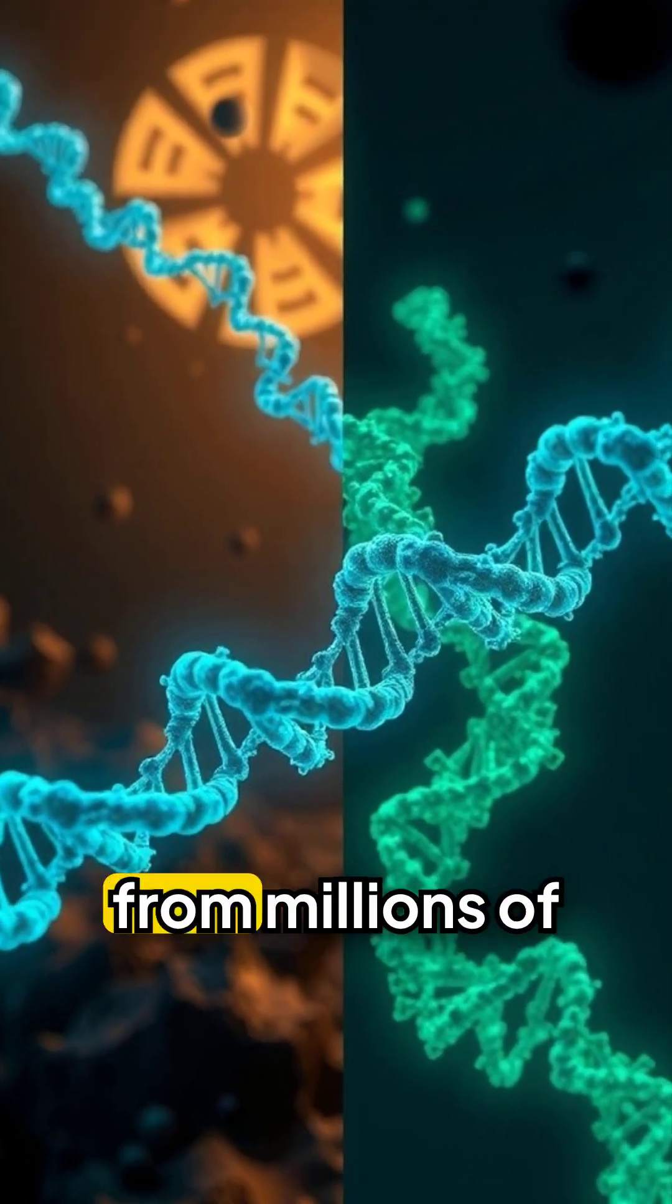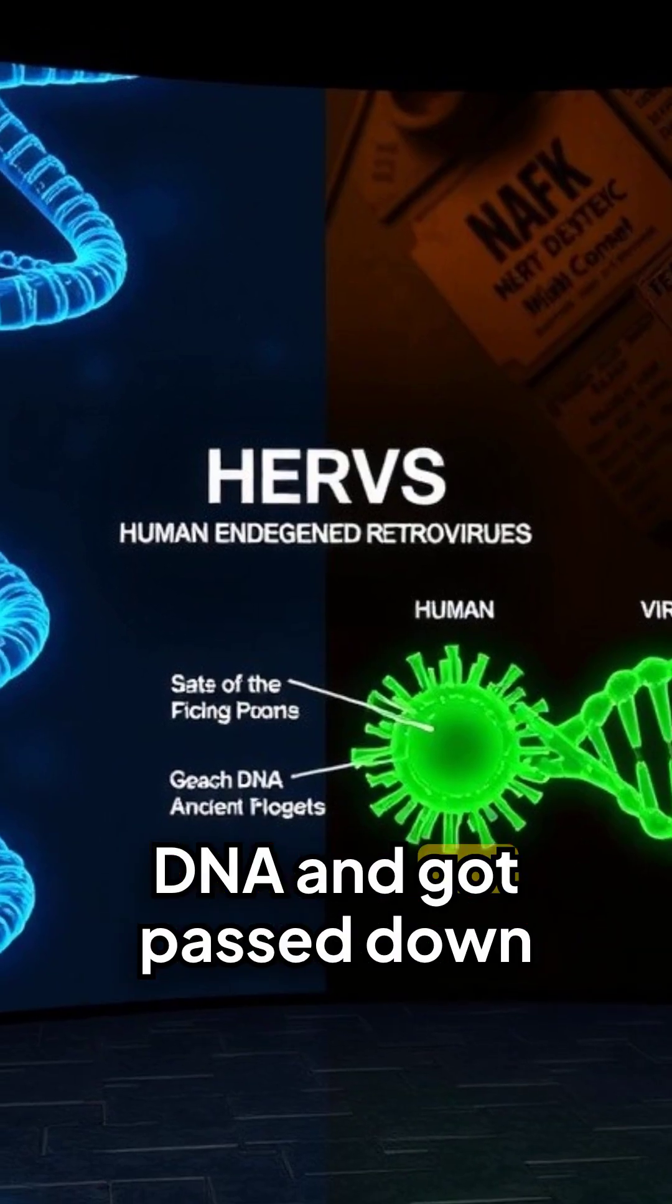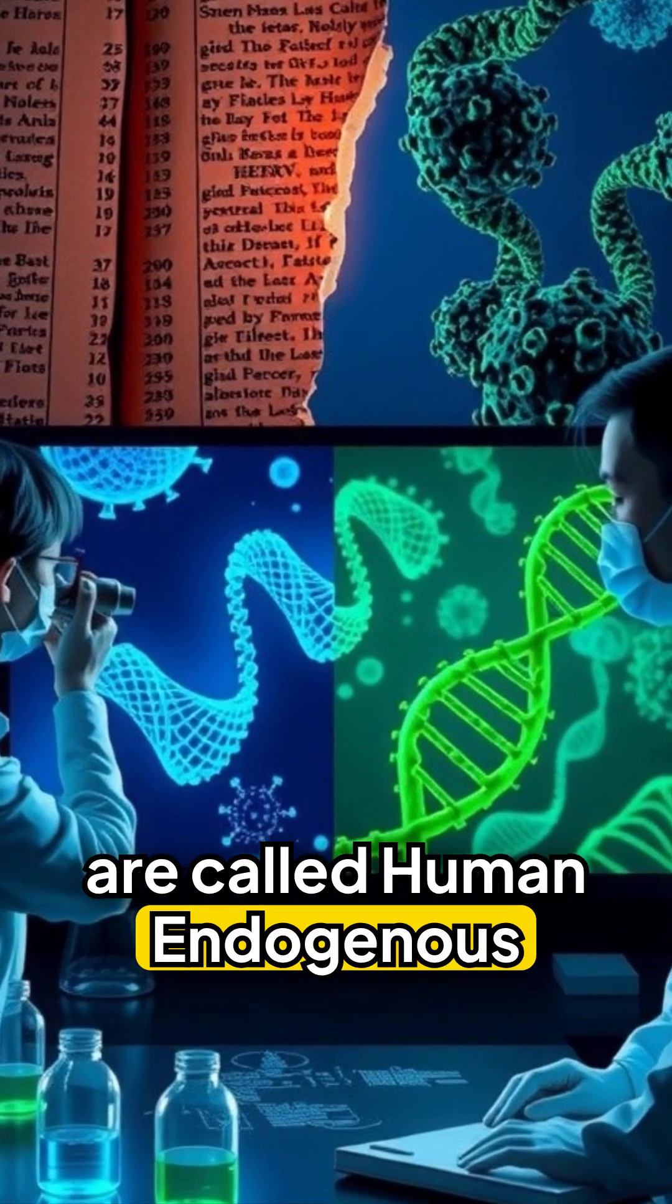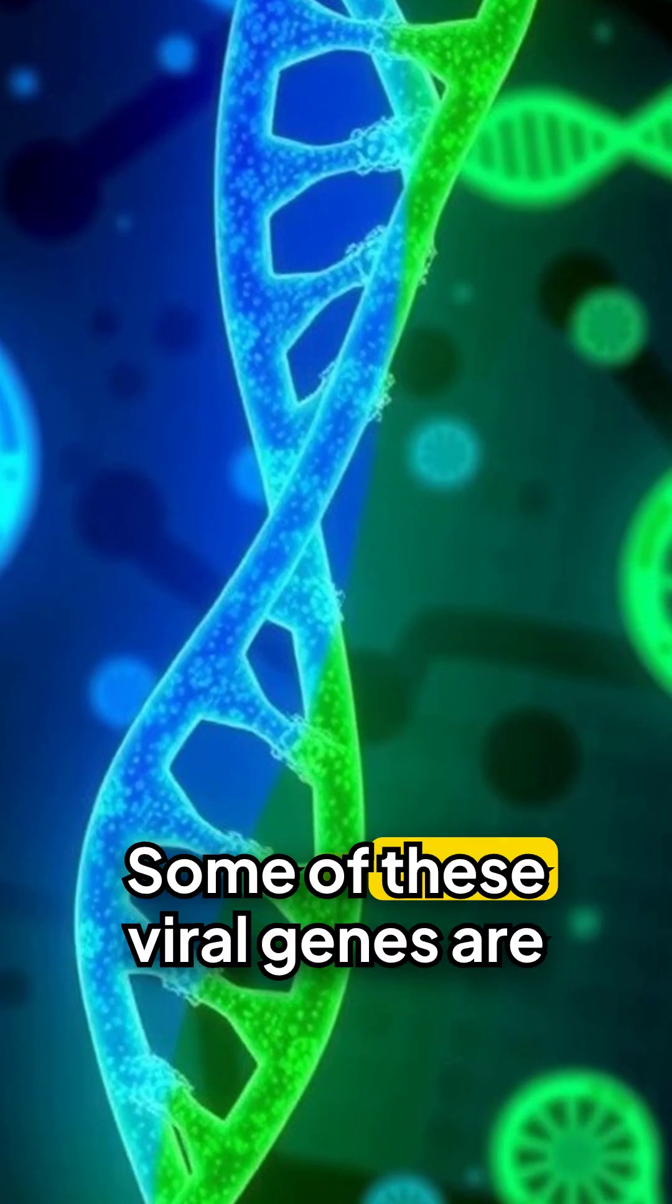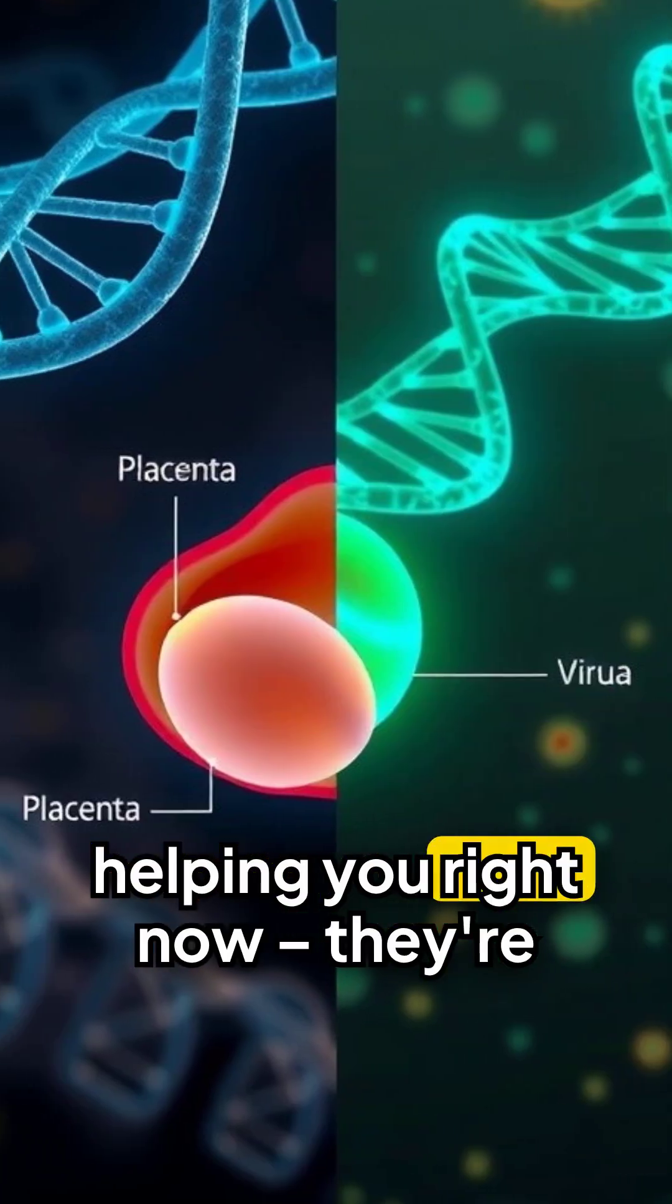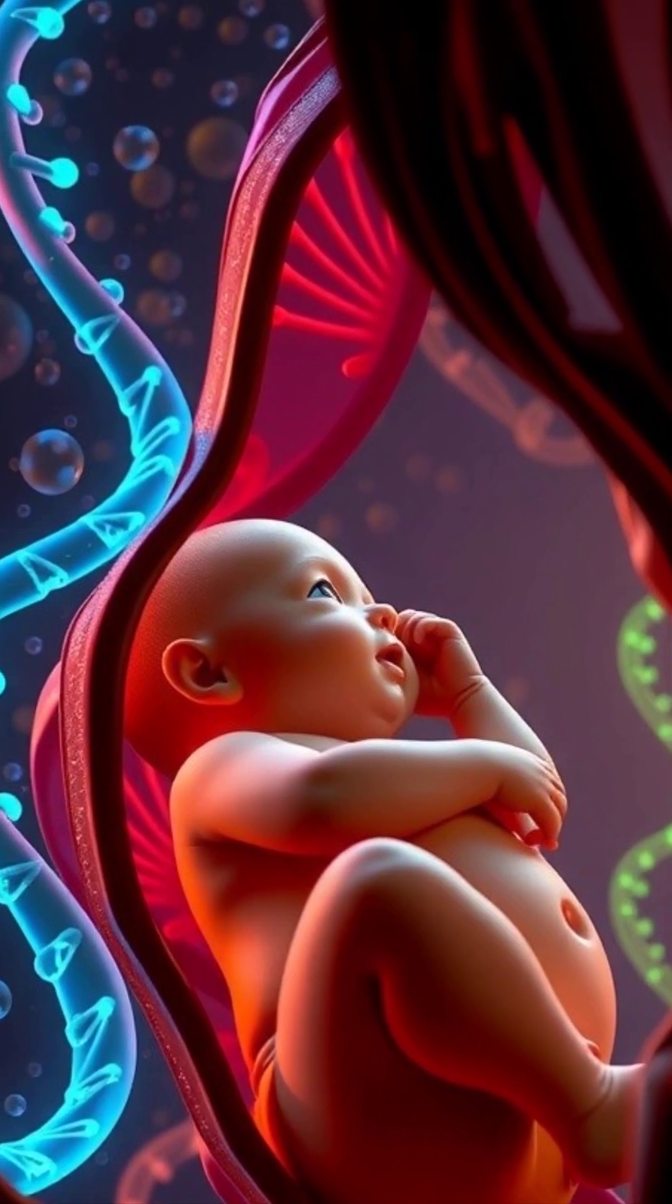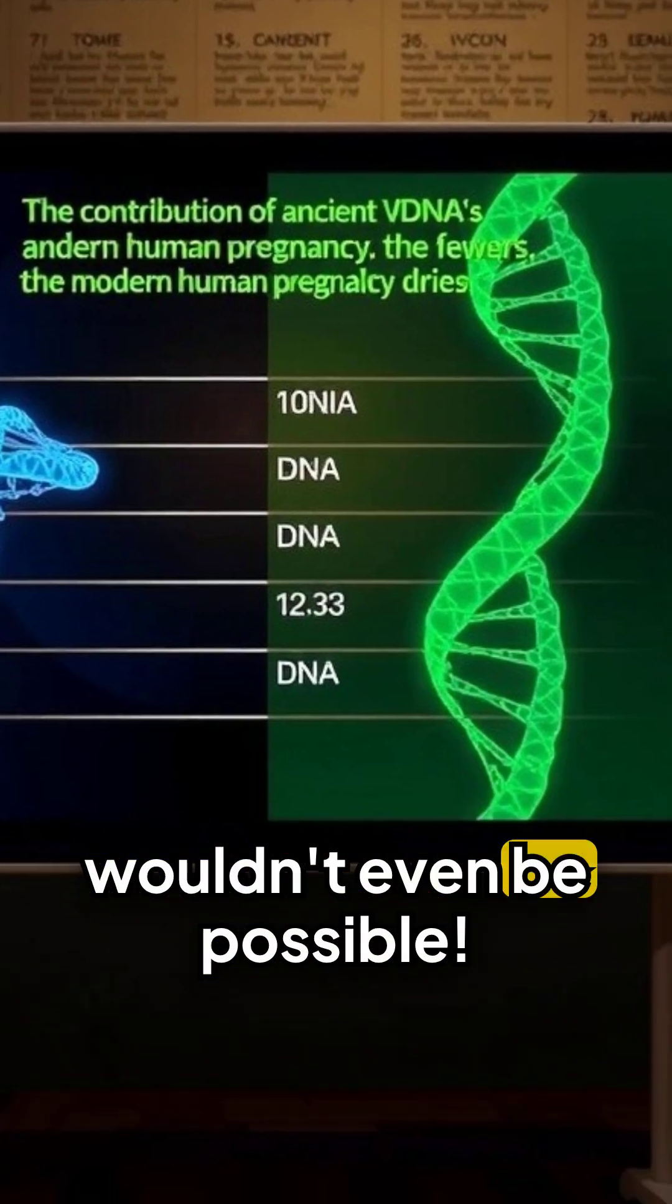We're talking about ancient viral infections from millions of years ago that inserted themselves into our ancestors' DNA and got passed down forever. These viral remnants are called human endogenous retroviruses, or HERVs for short. Some of these viral genes are actually helping you right now. They're essential for placenta formation during pregnancy. Without ancient virus DNA, human pregnancy wouldn't even be possible.